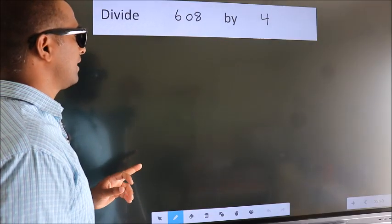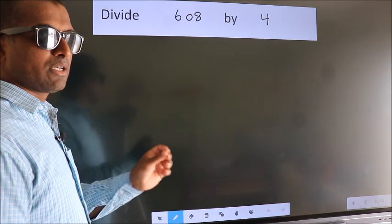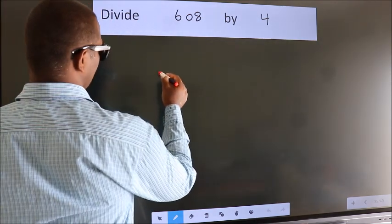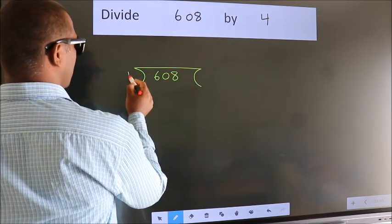Divide 608 by 4. To do this division, we should frame it in this way. 608 here, 4 here.